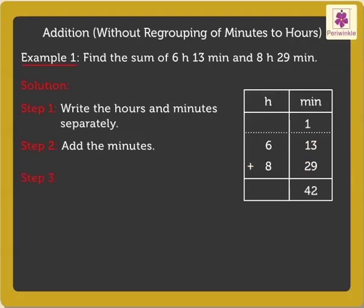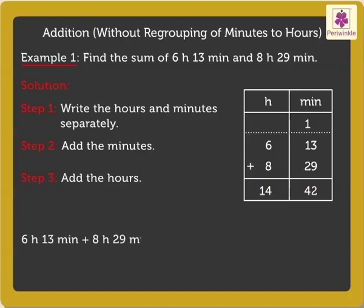Step 3: Add the hours. Adding 6 hours and 8 hours, we get 14 hours. We found the answer: 6 hours 13 minutes plus 8 hours 29 minutes is equal to 14 hours 42 minutes.